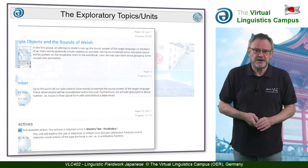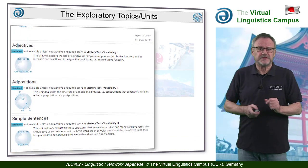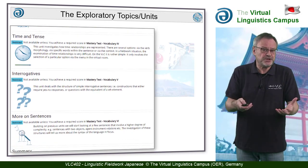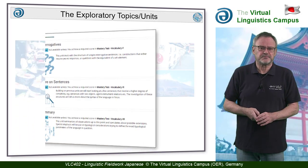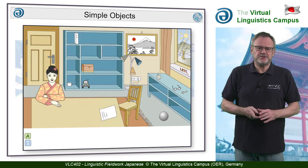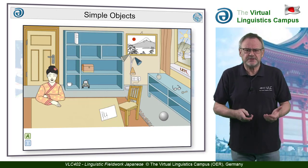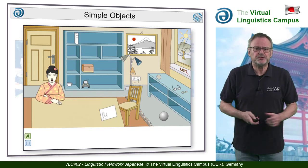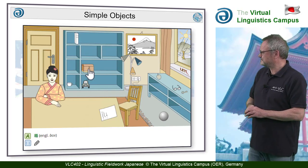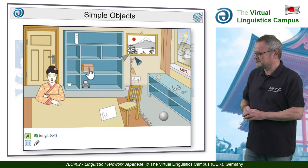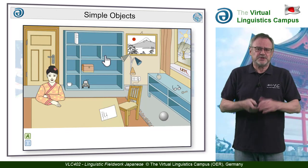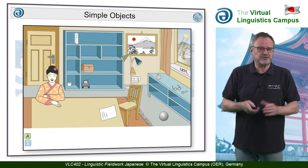The core of the course are the fieldwork units, each with an exploratory part — the so-called virtual scene — which is dedicated to a particular topic. The first scene deals with simple objects. In our virtual interview room, you find the native speaker and a number of clickable objects with their audio and orthographic representation. Your task is to transcribe what you hear as carefully as possible in order to set up a first sound inventory of the language in focus.